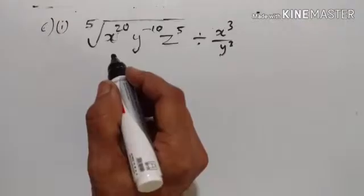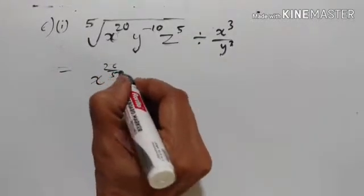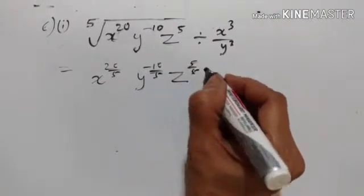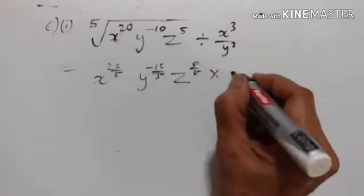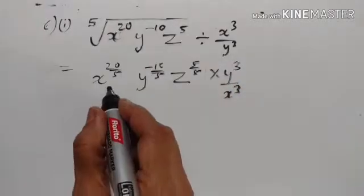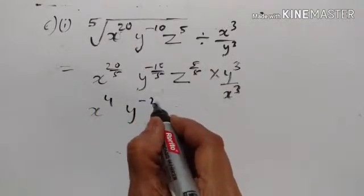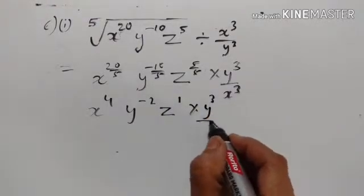Concise Mathematics 8th class exponents exercise 2b. This is the fifth root: x raised to the power of 20 upon 5, y raised to the power of minus 10 upon 5, z raised to the power of 5 upon 5, divided by x cube upon y cube — this becomes multiplied by y cube upon x cube. 20 upon 5 gives x raised to the power of 4, y raised to the power of minus 2, z raised to the power of 1, into y cube upon x cube.